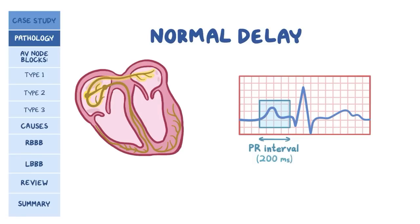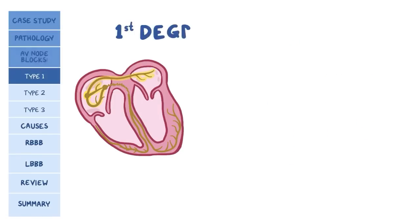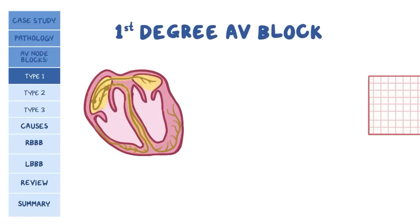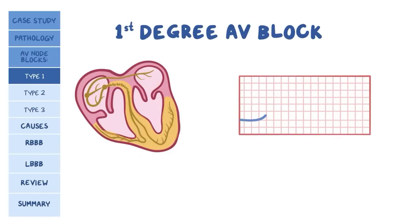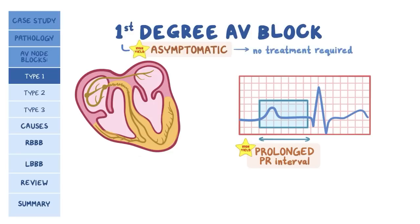First degree AV block is technically not really a block — it's more of a delay. Every single atrial impulse eventually makes it to the ventricles. The high-yield concept here is that the only abnormality is a prolonged PR interval, and it's usually asymptomatic, so it doesn't require treatment.